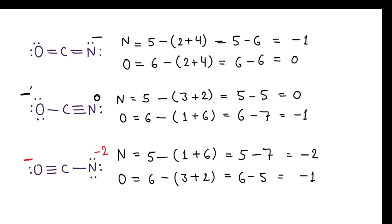In conclusion, the third resonance structure is the least stable because a minus 2 charge is very far from 0. Of the first two, because oxygen is more electronegative, it is better to put the negative charge on the oxygen atom. Therefore the second structure is the most stable, and the first is the second most stable. Thanks for watching this video.